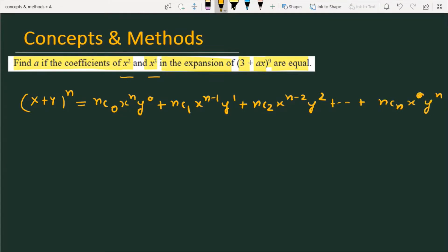But you need to expand (3 + ax)⁹. If I compare this expression with the above formula, the first term is ⁹C₀ · 3⁹ · (ax)⁰.